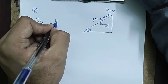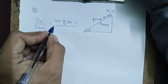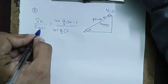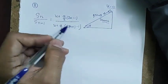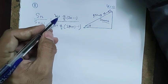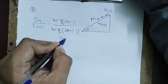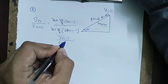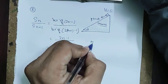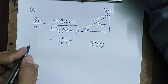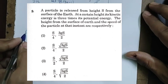Using the formula for distance in the nth second: s_n = u + (a/2)(2n−1). With u = 0 and a = g sin θ, the ratio simplifies to (2n−1)/(2n+1) — option 2.